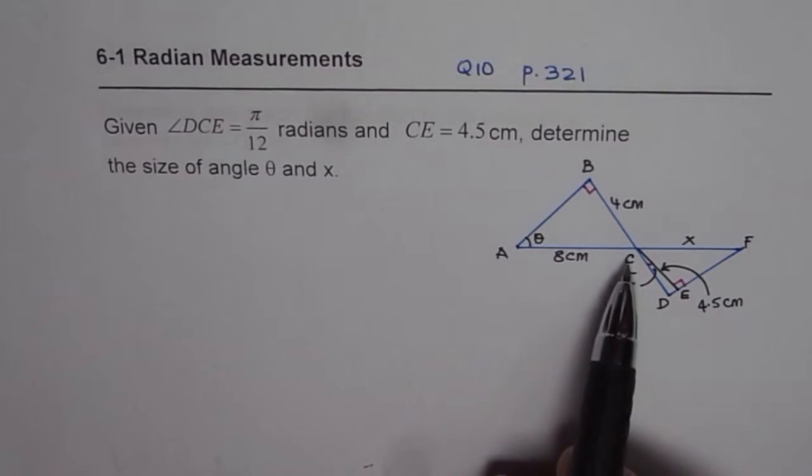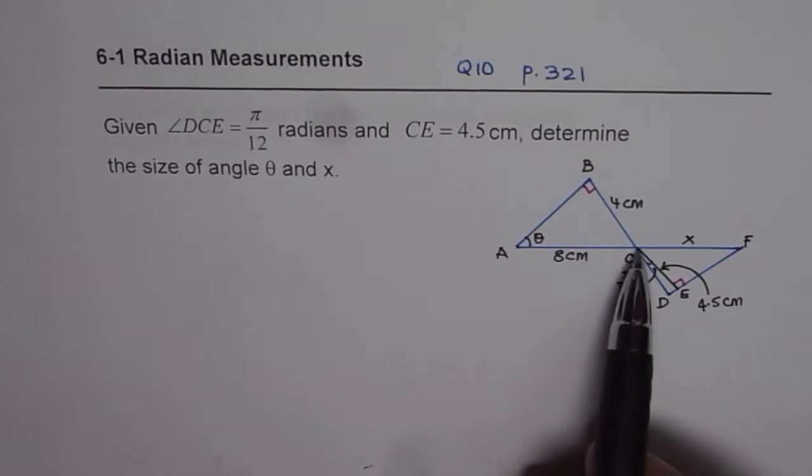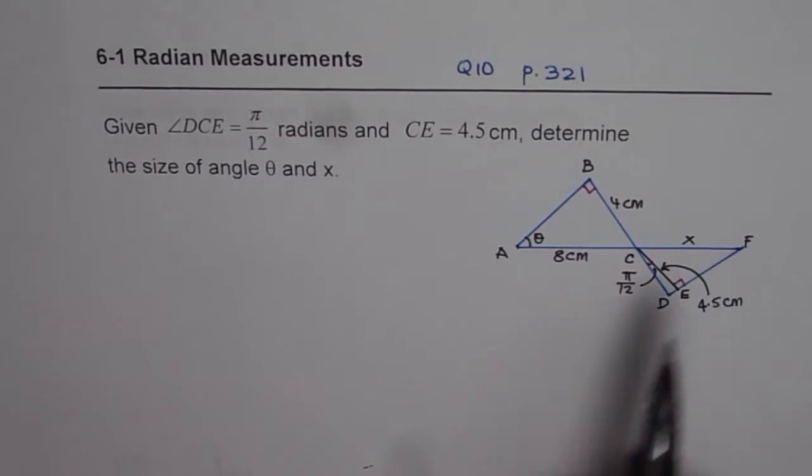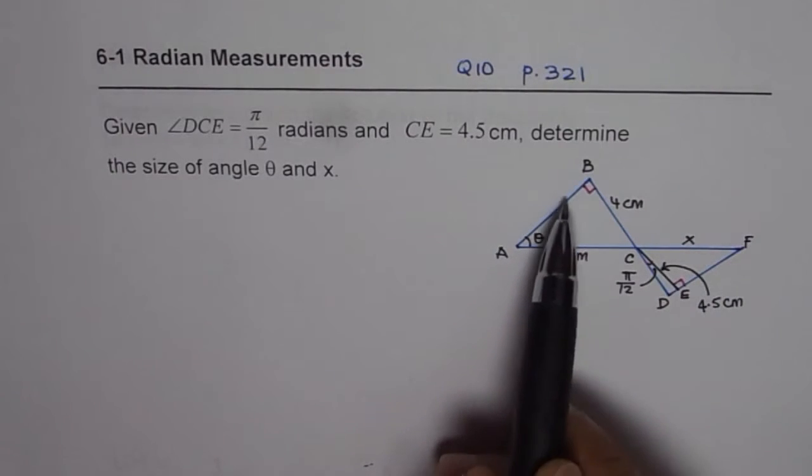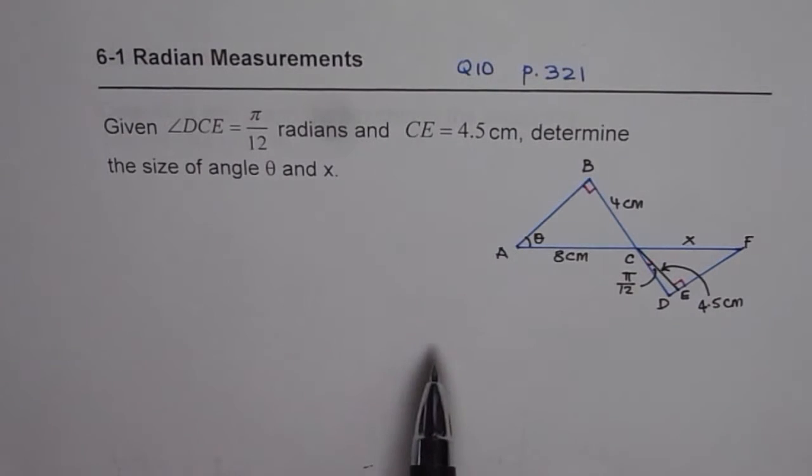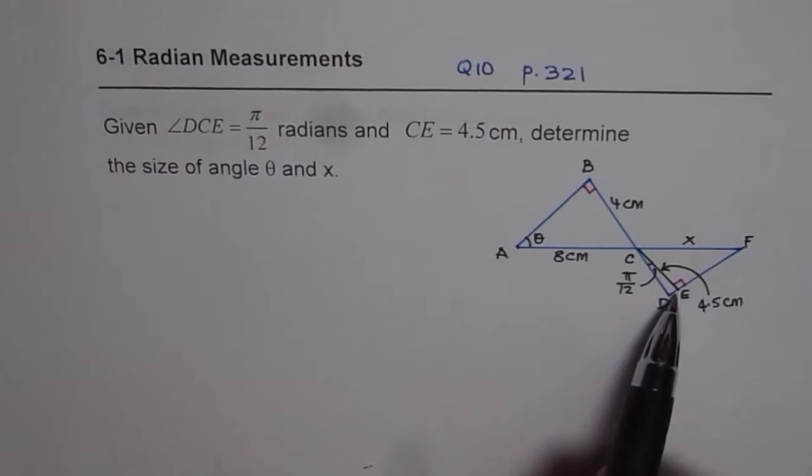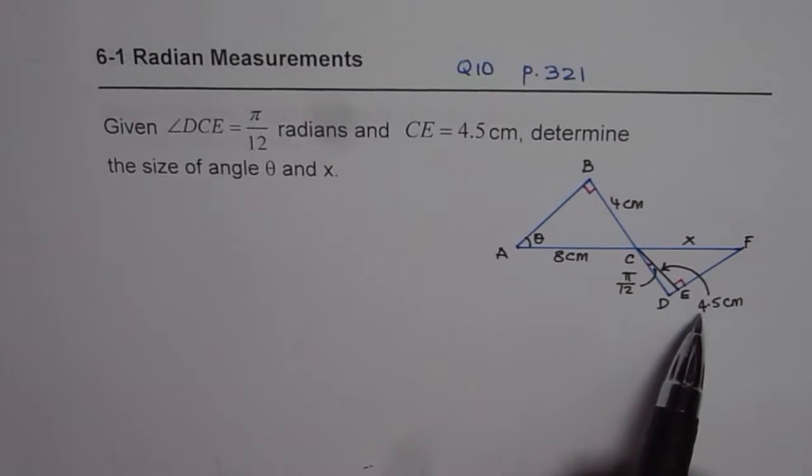So we have a triangle ABC. The angle DCE, the small angle, is π/12. You need to find x, the length of segment CF and angle θ, angle BAC. You are also given CE is perpendicular and it is 4.5 cm long.